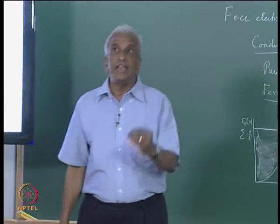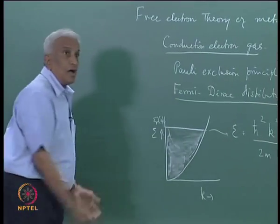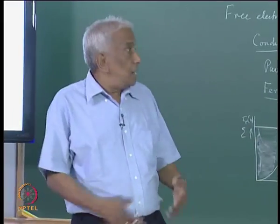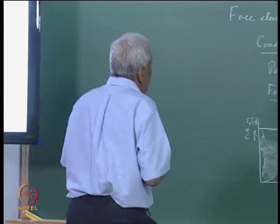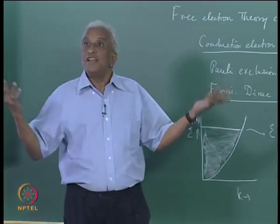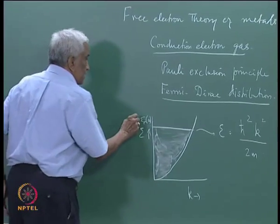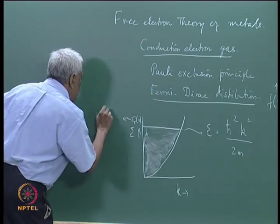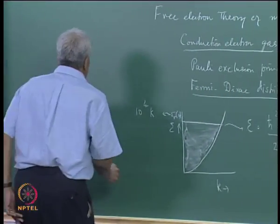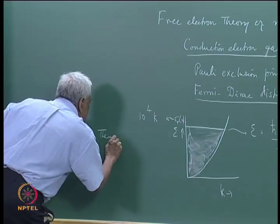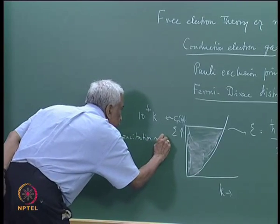This modifies the way electrons are distributed in energy, given by the dispersion curve E versus k, governed by the kinetic energy h-bar squared k squared over 2m. This gives a parabolic curve, and states up to the Fermi energy are completely filled. We discussed last time the contribution of these electrons to the specific heat — when there is thermal excitation, the electrons absorb heat and contribute to specific heat.